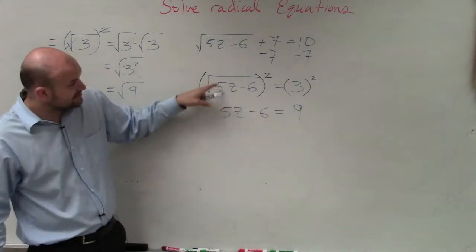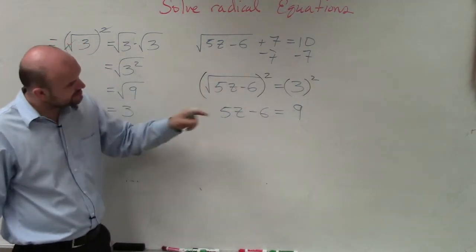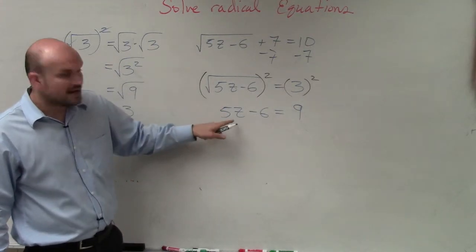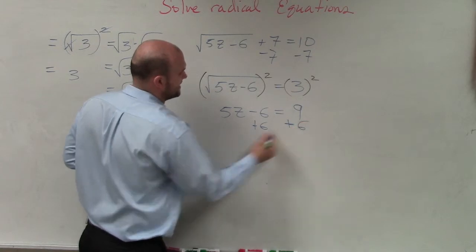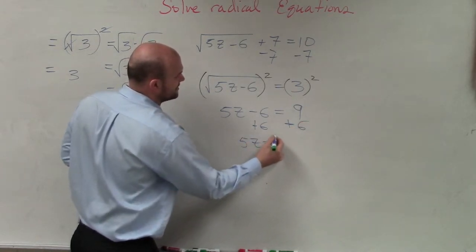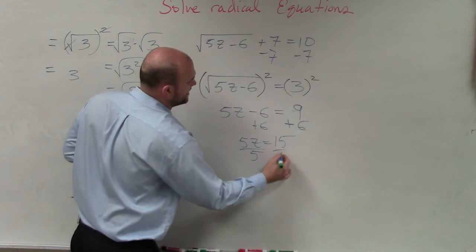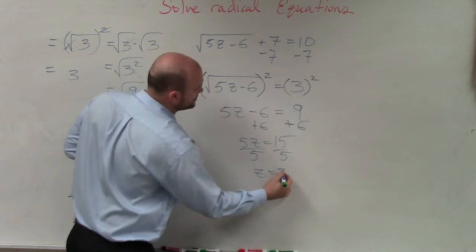So that's the same thing as this. This is 5z minus 6 times 5z minus 6, which is anything else. So now I go ahead and solve. So I add 6, add 6. I have 5z is equal to 15. Divide by 5, divide by 5, z equals 3.